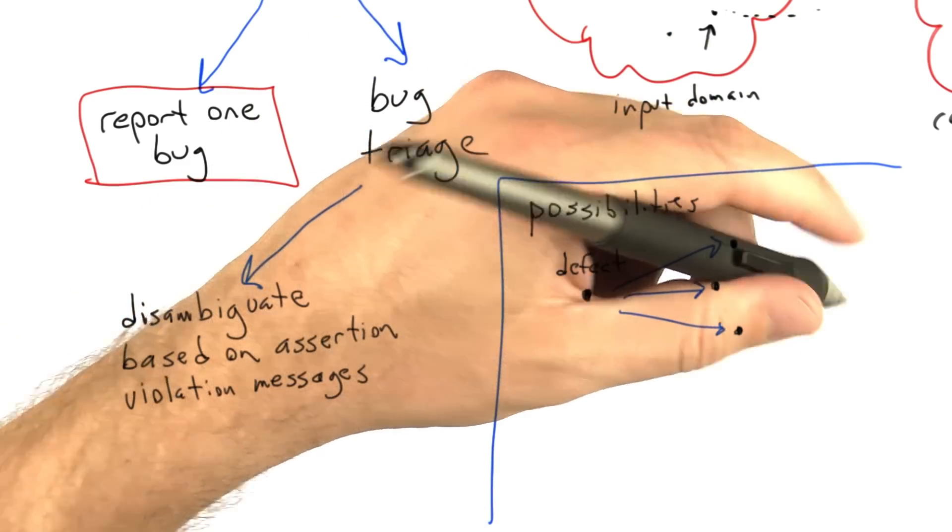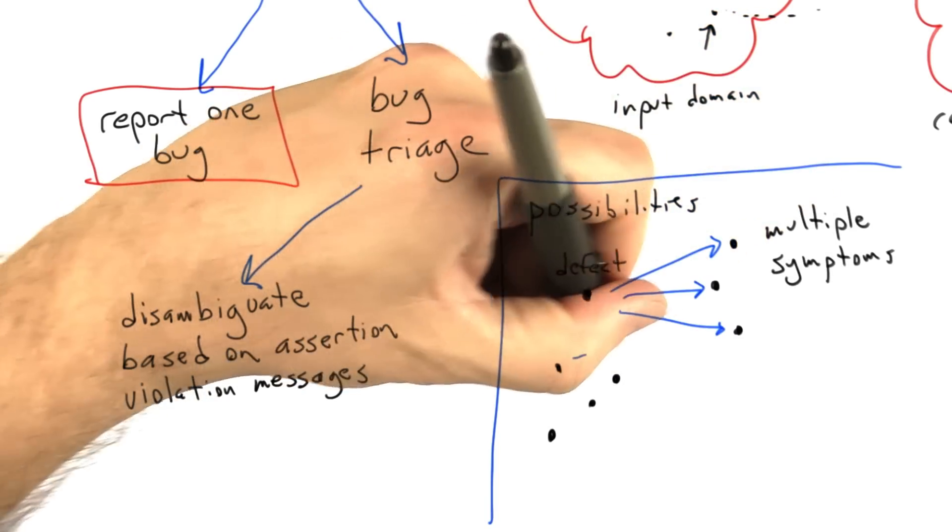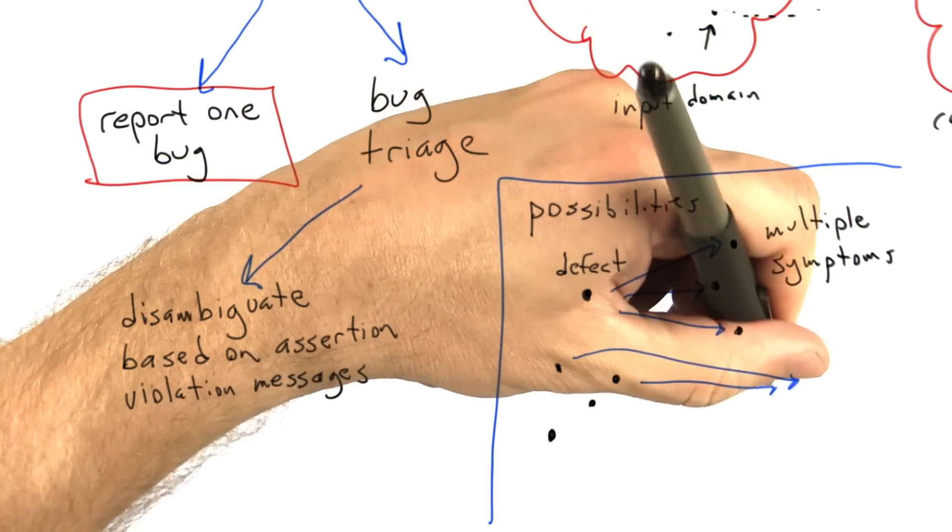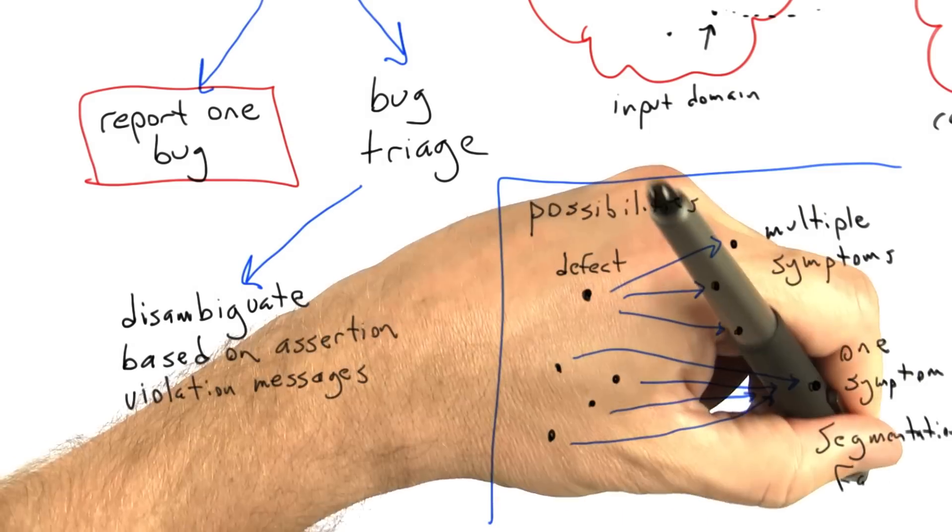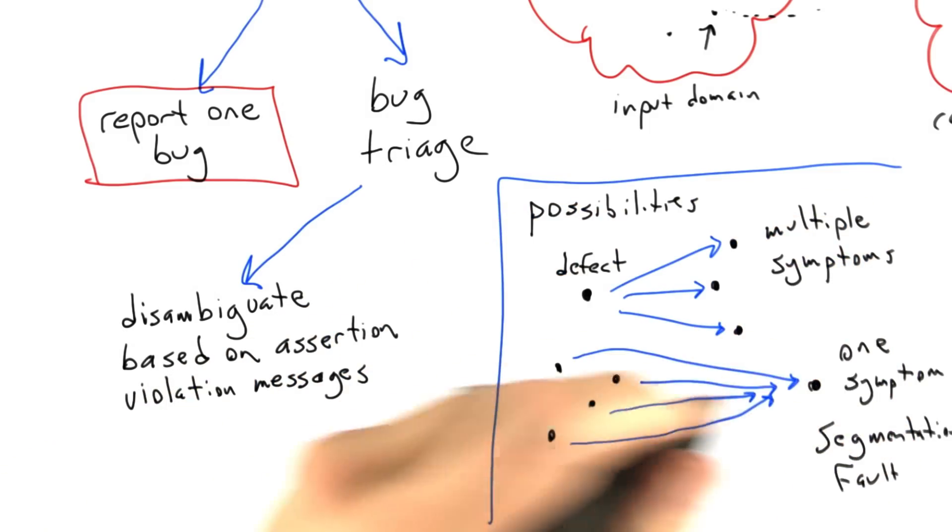Another possibility is that we can have multiple defects that all cause the same symptom, and this is actually really common. For example, in a big C or C++ program like a web browser, it's very common for multiple memory safety defects—buffer overruns and null pointer references—to all have the same symptom, which is segmentation fault.